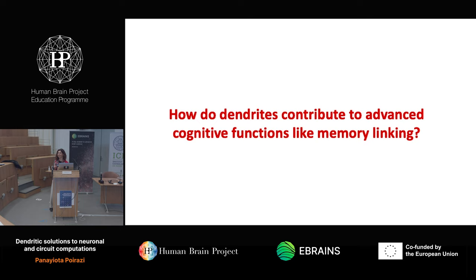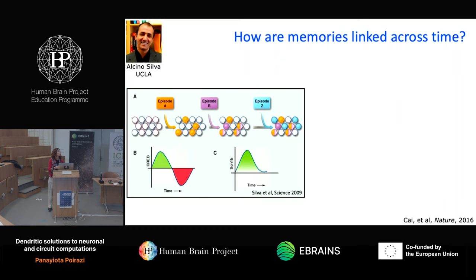I want to tell you a small story about circuit computations and how these properties of dendrites can contribute to circuit learning. This is a work done in collaboration with Alcino Silva about linking memories across time — a difficult cognitive problem. The question is: do these dendritic nonlinearities contribute something to this more difficult cognitive function?